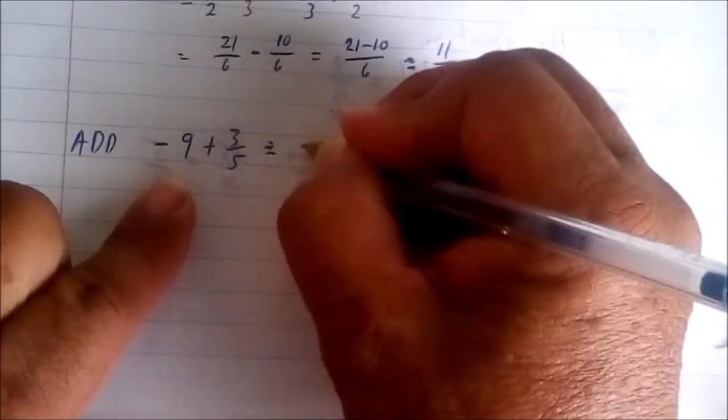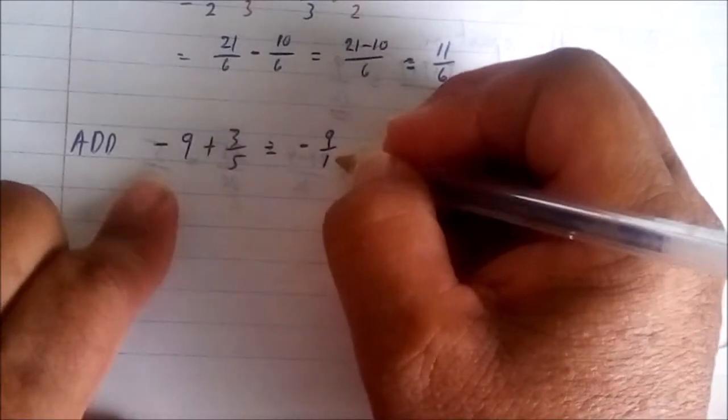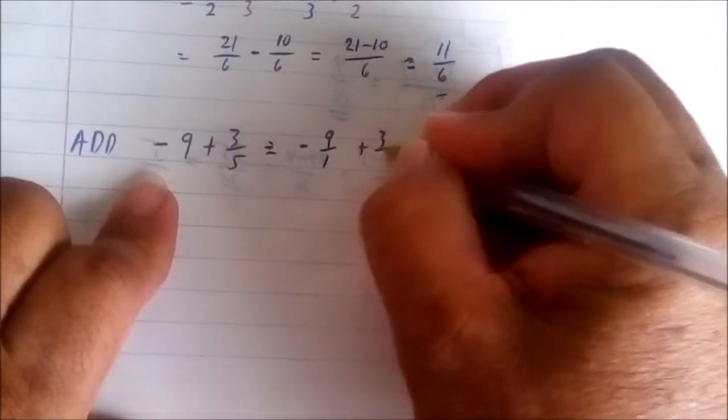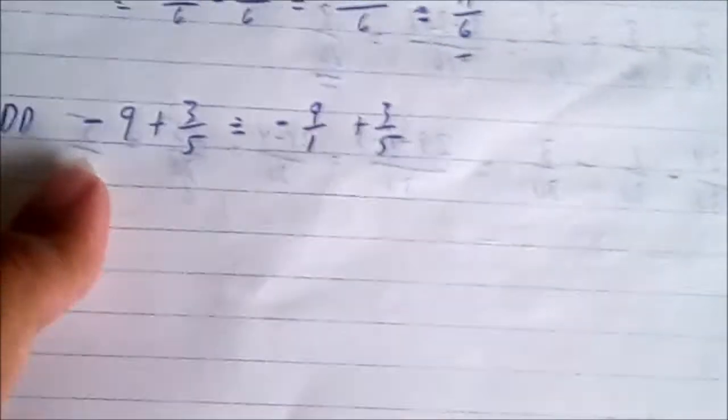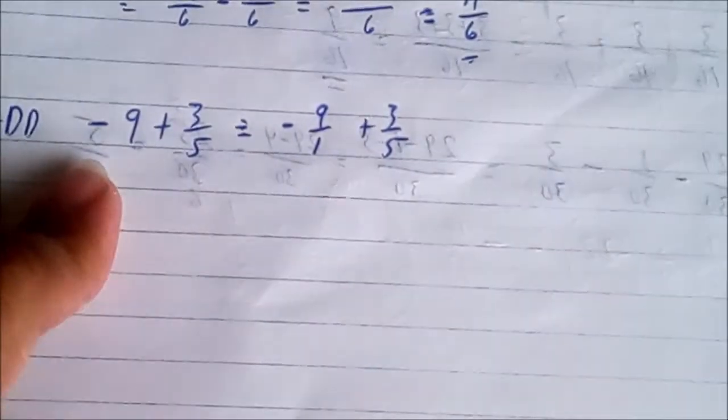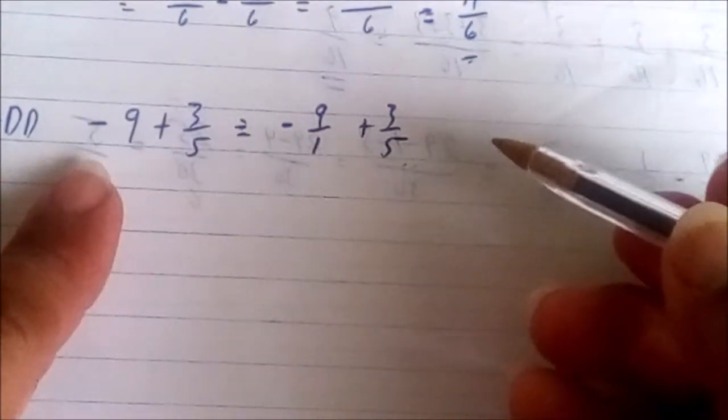So we do that as the first step. That's negative 9 over 1, it is still negative 9, plus 3 over 5. Now what's the LCD of 1 and 5? Simply 5.